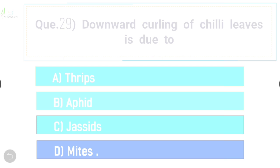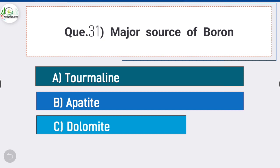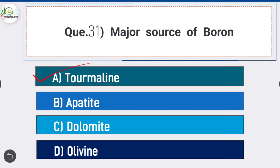Question number thirty: chicken tongue is a physiological disorder of - answer is option A - litchi. Question number thirty-one: major source of boron is - answer is option A - tourmaline. Tourmaline is the major source of boron. Question number thirty-two: recently formed soil order is - answer is option A - Entisol. Entisol is the recently formed soil order.